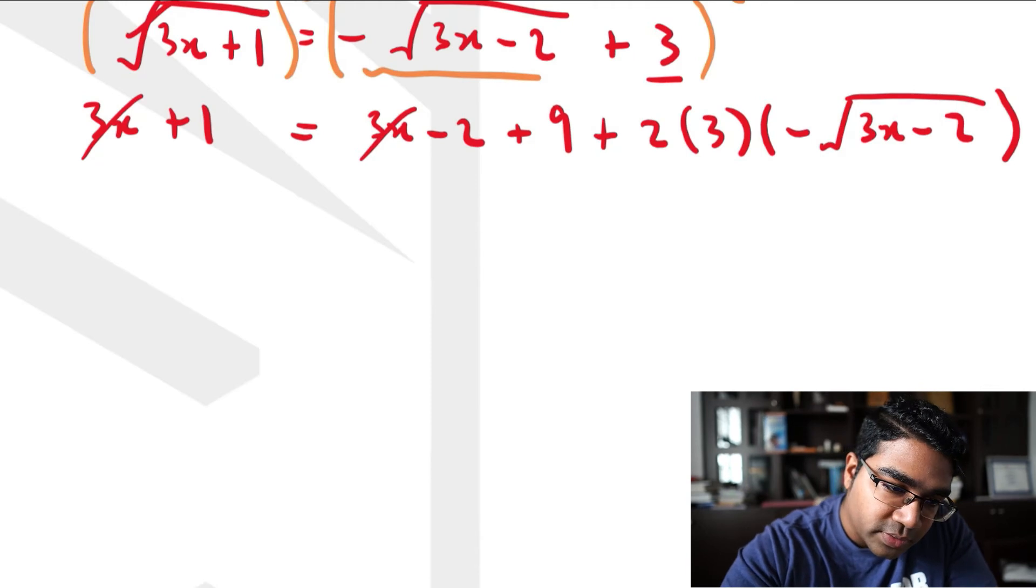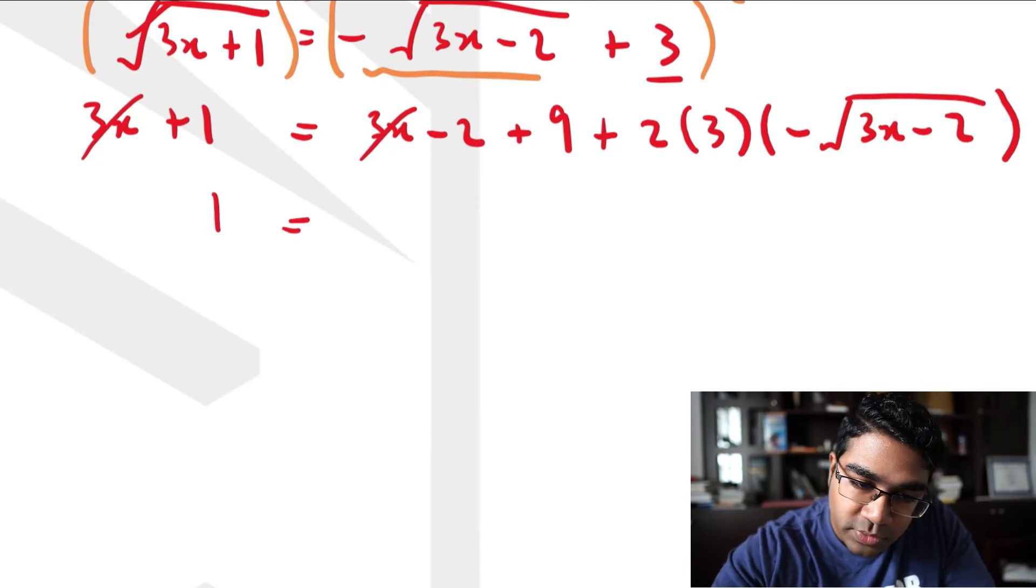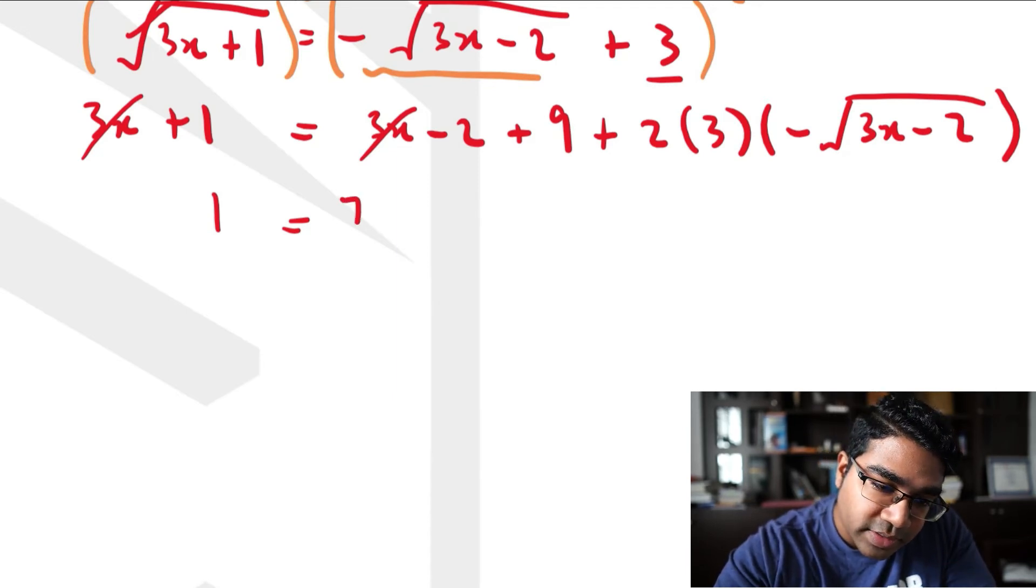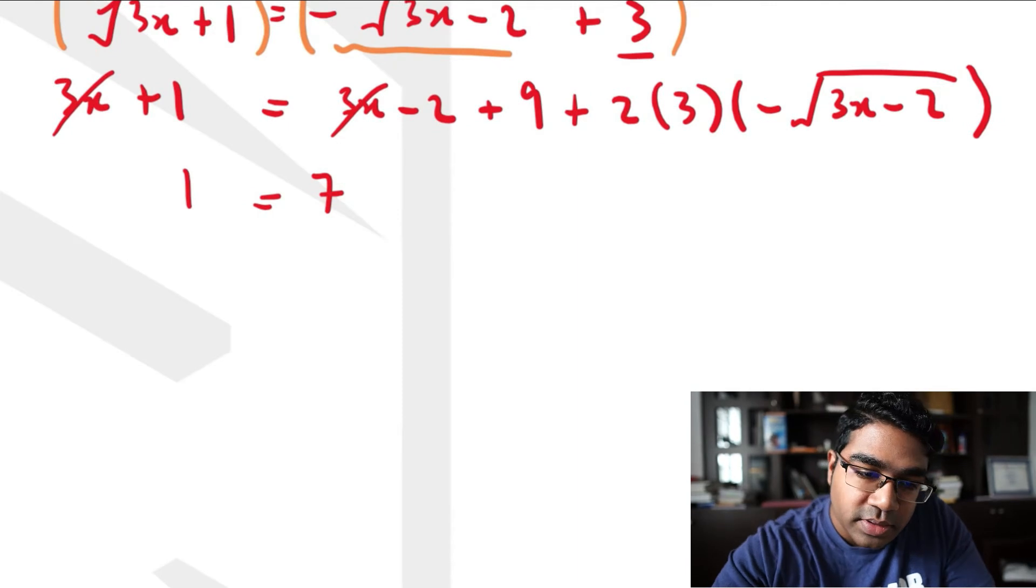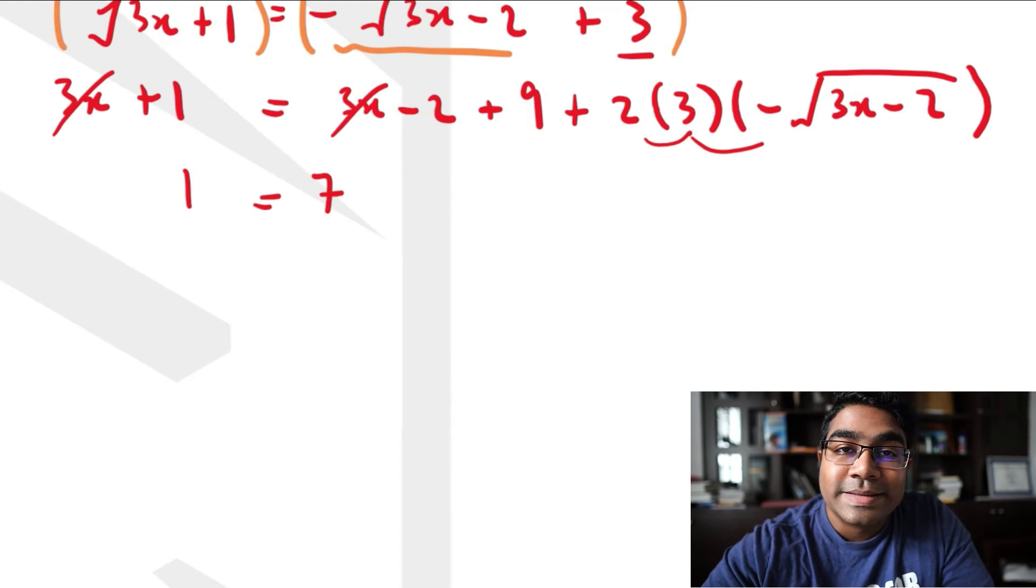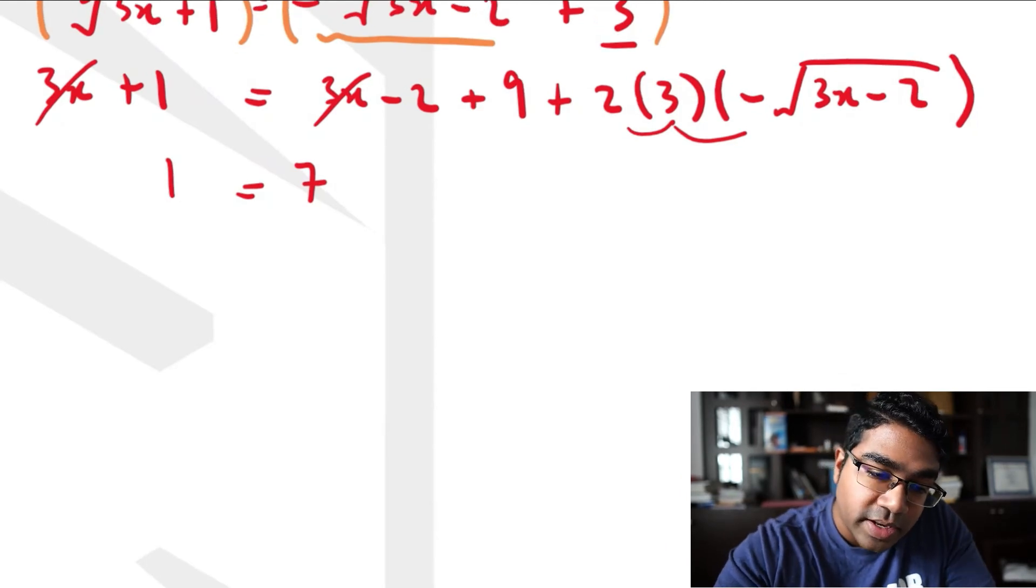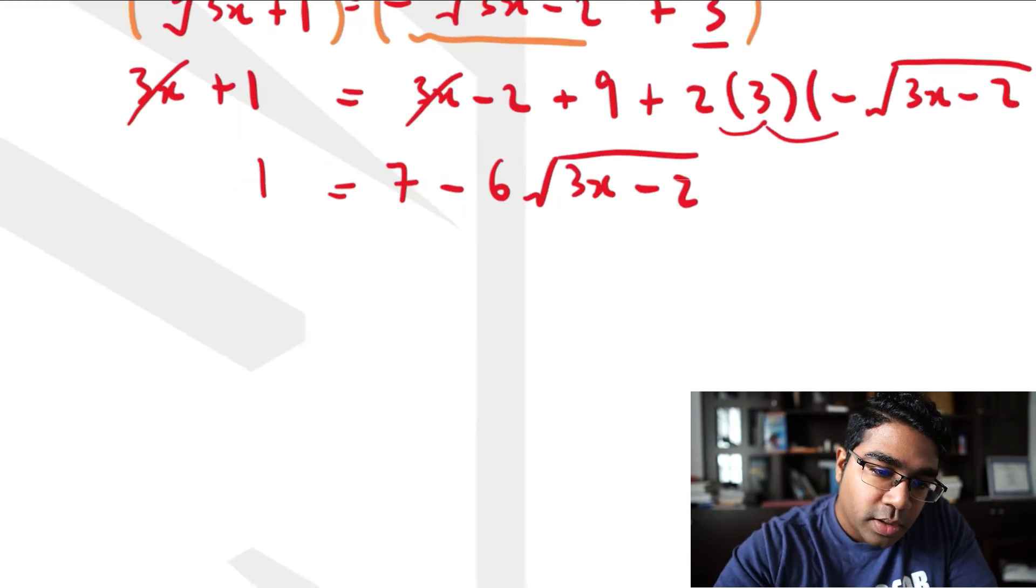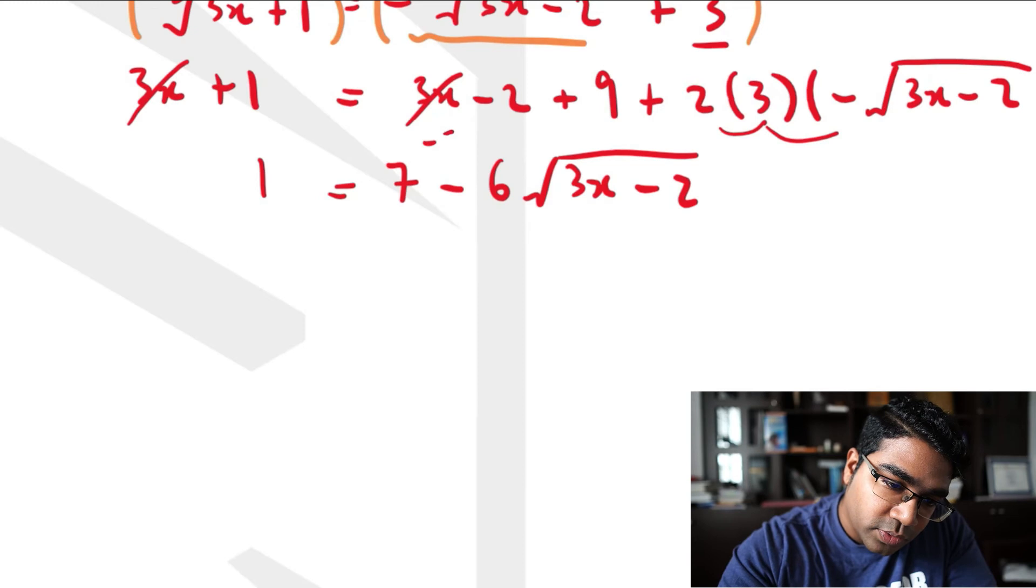So here we have 3x and 3x, minus 3x on both sides, it's eliminated. Okay, let's do this step by step. 1 equals to, on this side we still have -2 + 9, that makes 7. And then on this side we have multiply 2 into 3 into negative √(3x-2), that's -6√(3x-2).